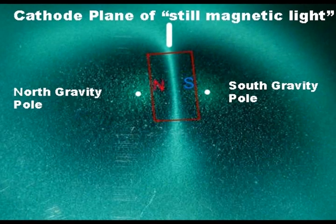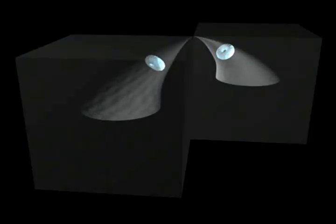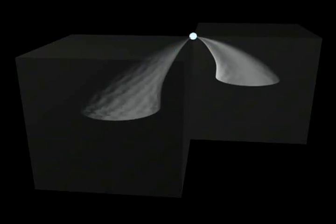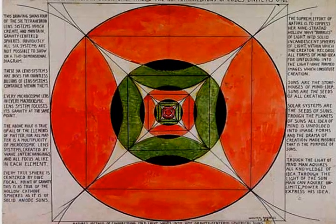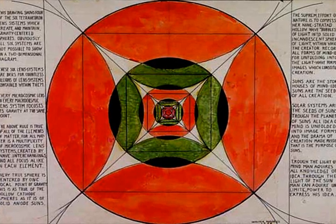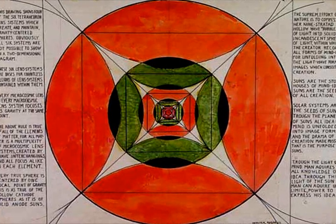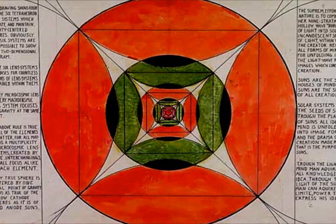North and south gravity poles of magnetic stillness control the sex-divided electric spinning rings which form spheres. These electric rings of the curved pressure gradients create biconvex and biconcave lenses as they pass through each other, spiraling inwards and outwards within the cubic wave fields.